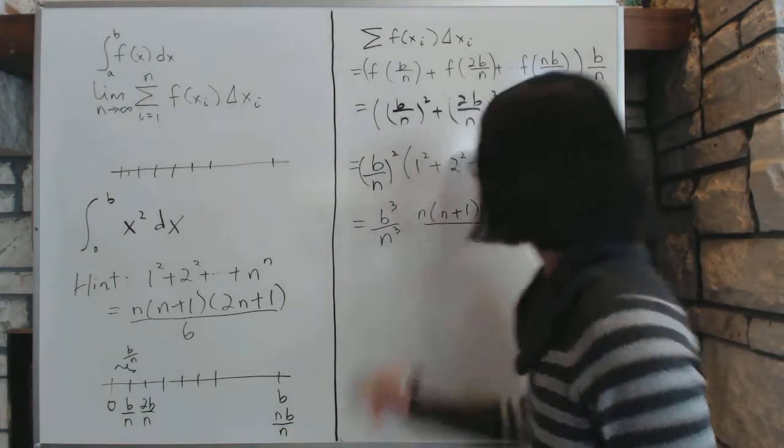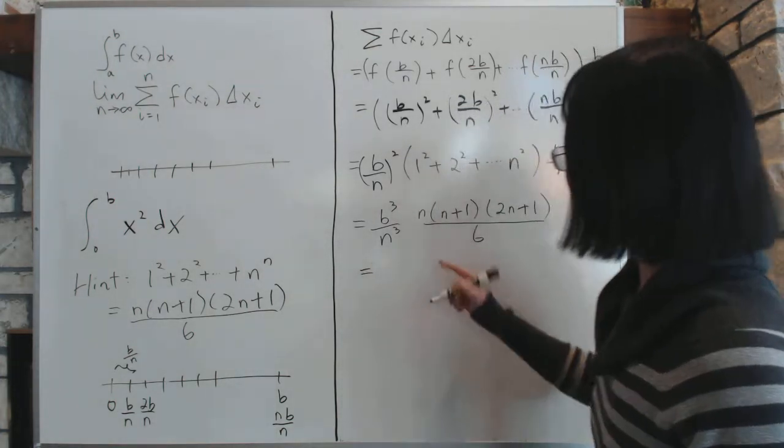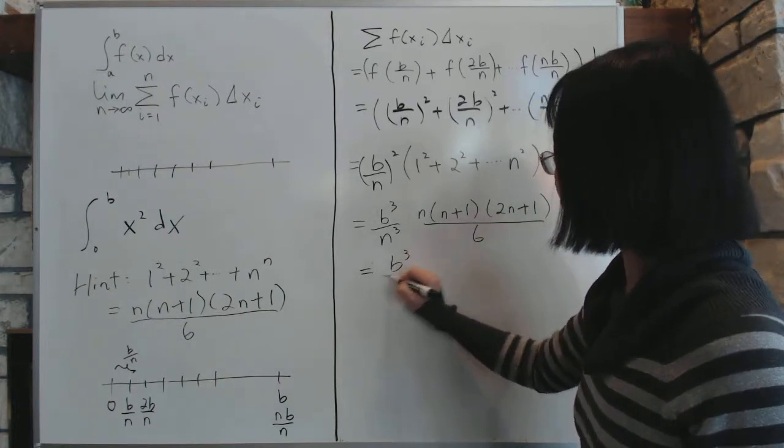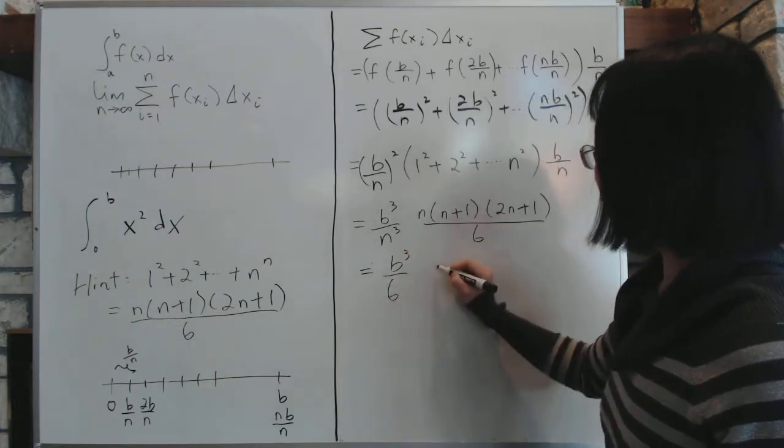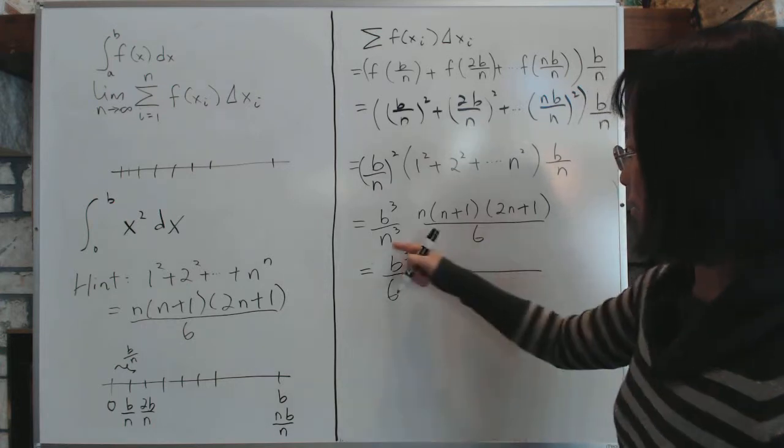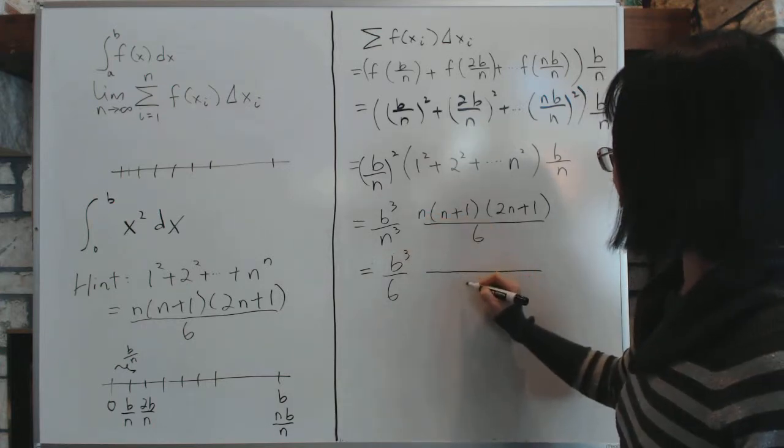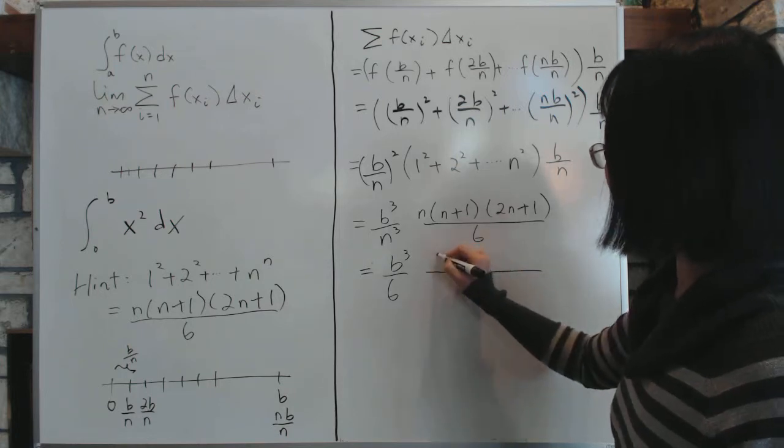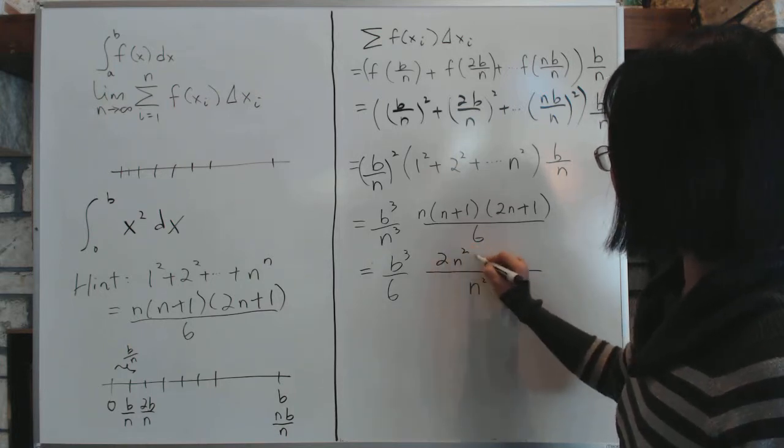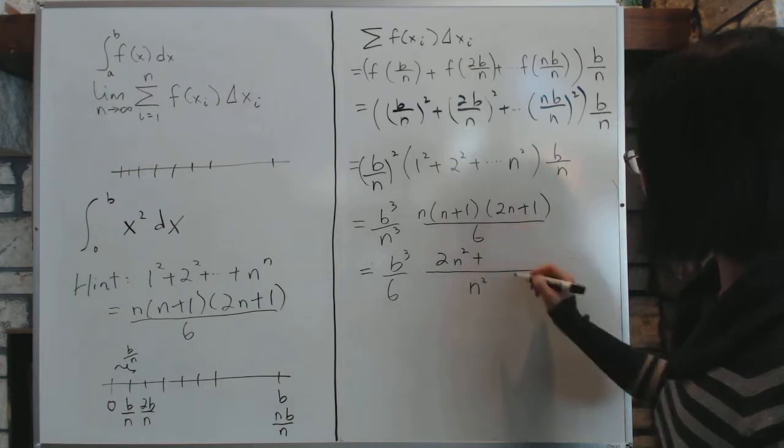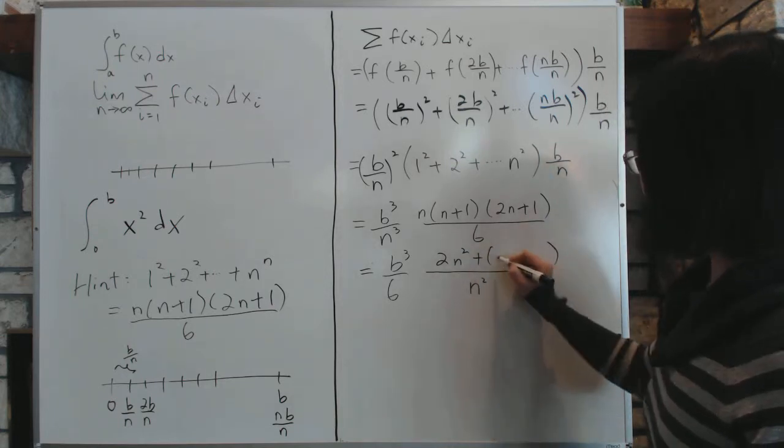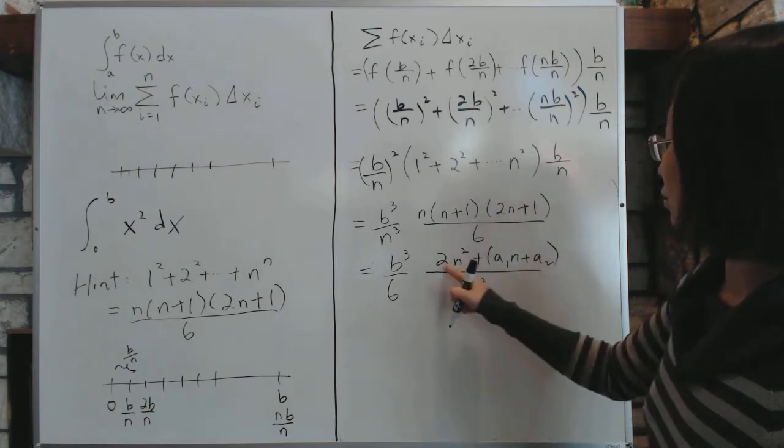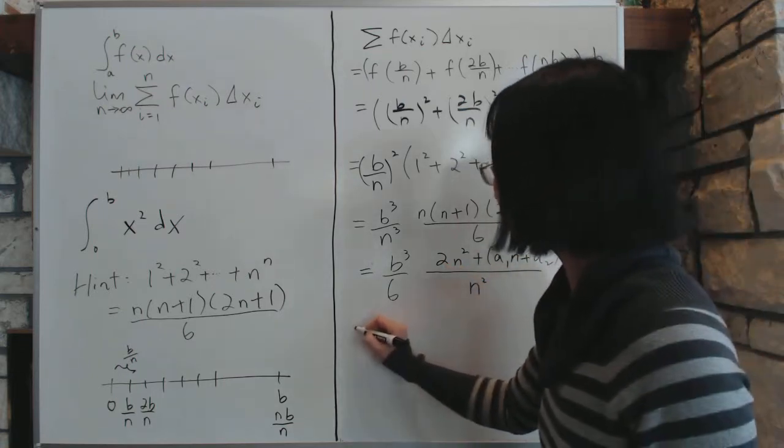And then, which is equal to, you can calculate this, we'll put the numbers over here. These are the constants. And then over here, we cancel out 1n. So it becomes n squared. And on the top, it becomes 2n squared plus whatever. Okay. A 1n plus a 2. We don't care what it is, because this is the only thing we care about as we take the limit.